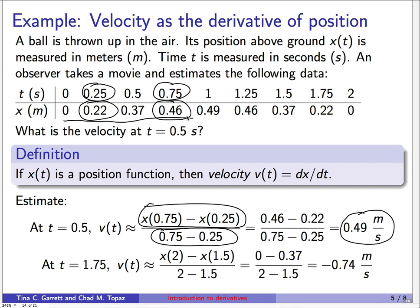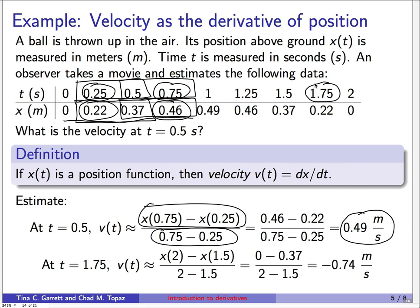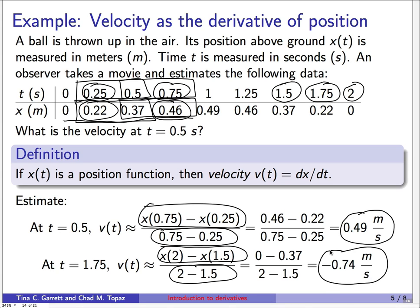We estimated the derivative by looking a bit to the right and left in the table, but we could have chosen other pairs of points and gotten slightly different answers — and that's fine, these are all just estimates. If we ask about velocity at time equals 1.75, we look a little later and earlier in time, compute the change in output divided by change in input, and find velocity equals minus 0.74 meters per second. The negative sign tells us the position function is decreasing — the ball is coming down.